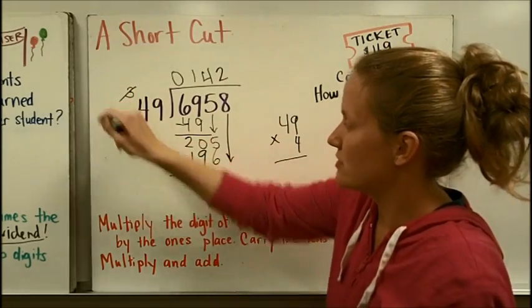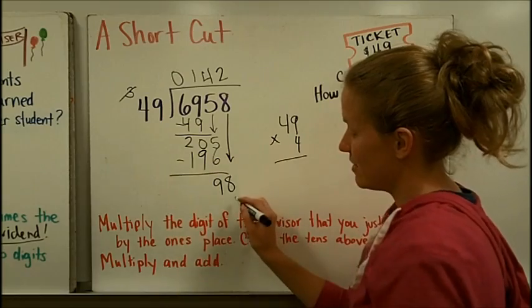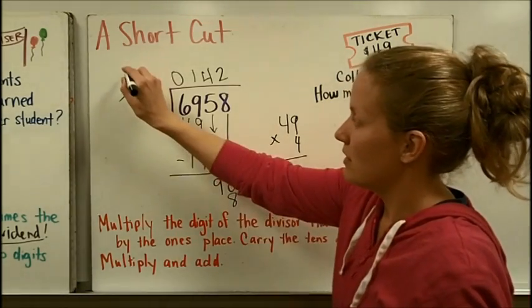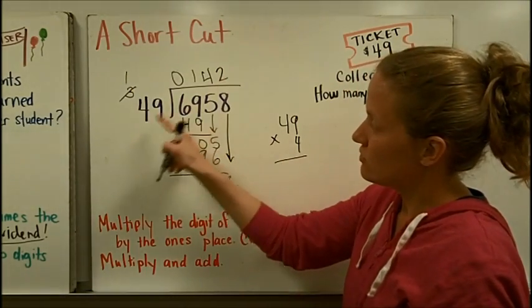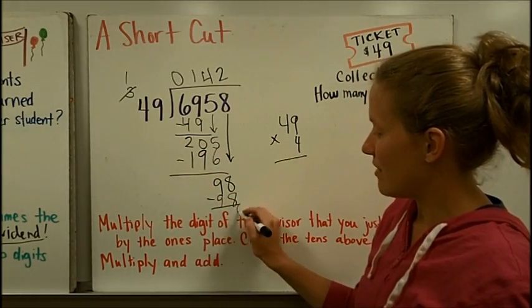And I can do it again. You might even want to cross this guy out. 2 times 9 is 18. Put the 8 down here. Carry the 1. 2 times 4 is 8. Plus 1 is 9. And I would have no remainder.